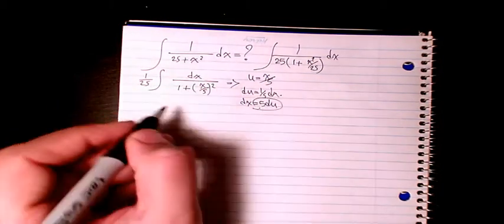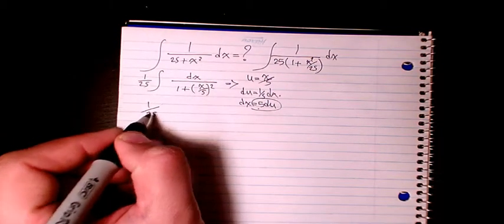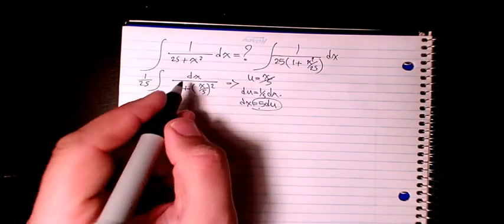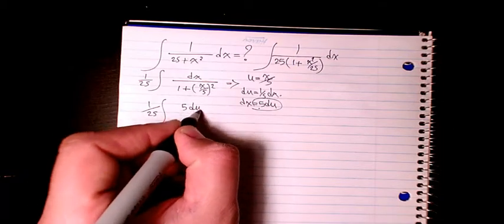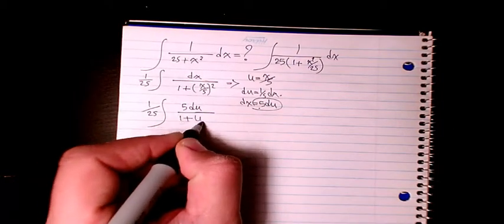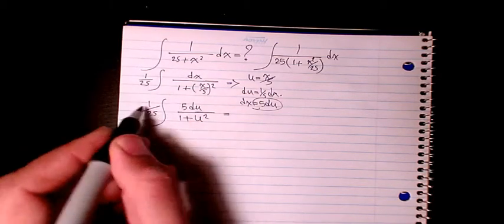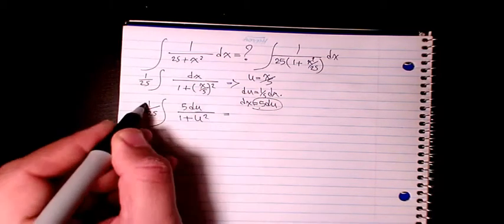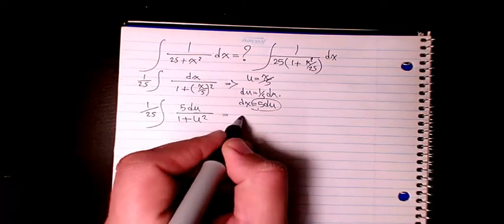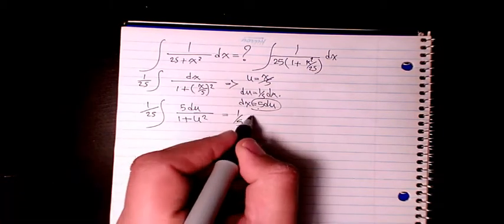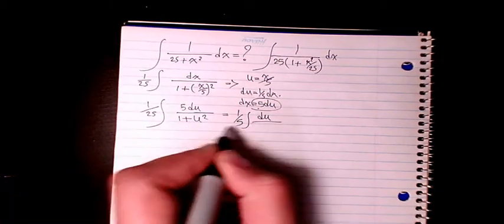So it's going to be 1 over 25, and then I will have 5 du over 1 plus u to the power of 2. So then 5 is going to go there, it's going to be 5 divided by 25. If you reduce it, it's going to be 1 over 5 du divided by 1 plus u squared.